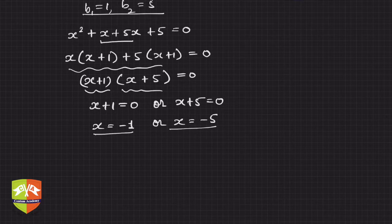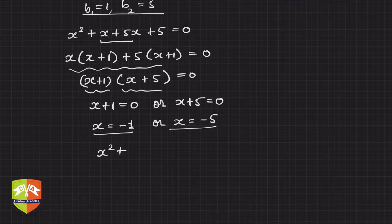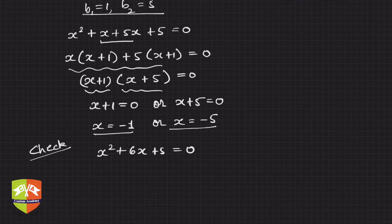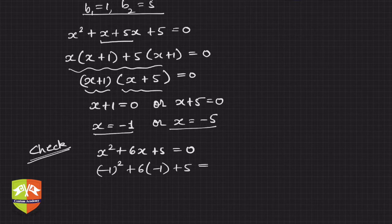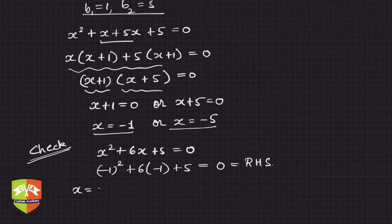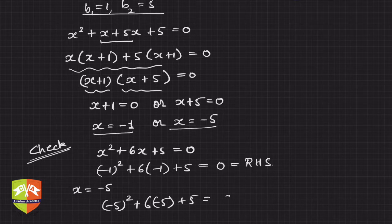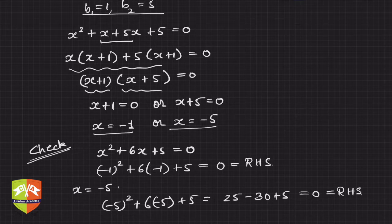Hence x = −1 or x = −5 is the solution. Let's check: put x = −1 into x² + 6x + 5 = 0: (−1)² + 6(−1) + 5 = 1 − 6 + 5 = 0 = RHS. Correct. For x = −5: (−5)² + 6(−5) + 5 = 25 − 30 + 5 = 0 = RHS. Hence both solutions x = −1 and x = −5 are correct.